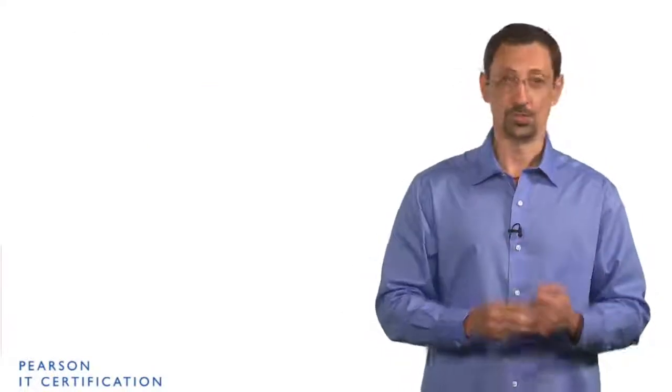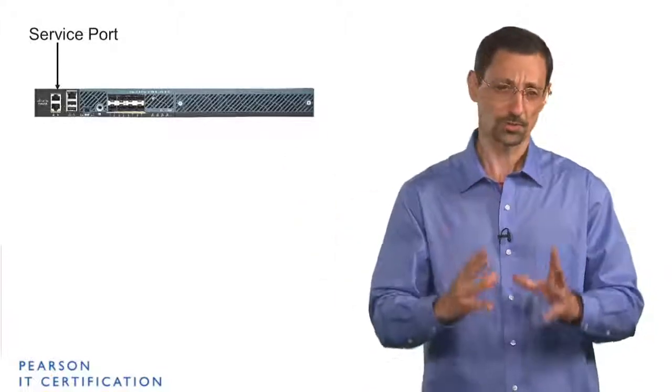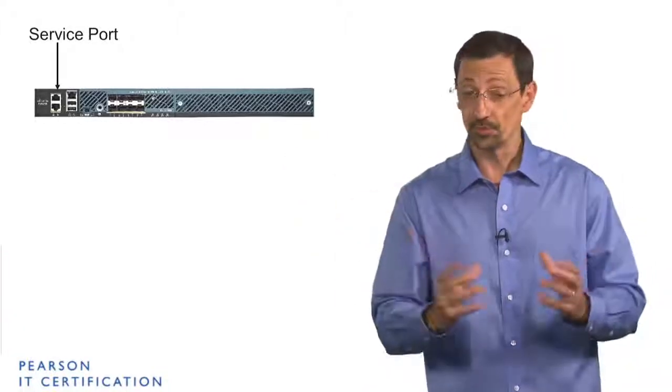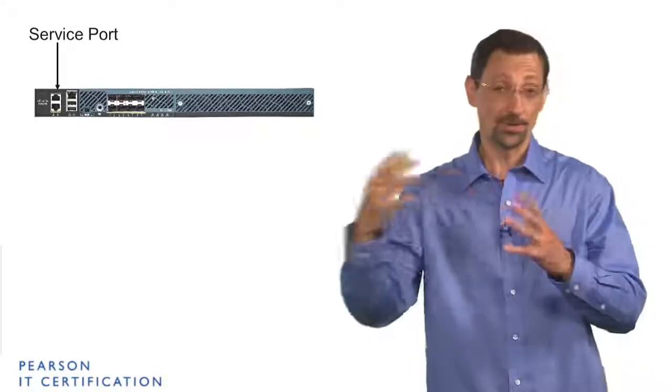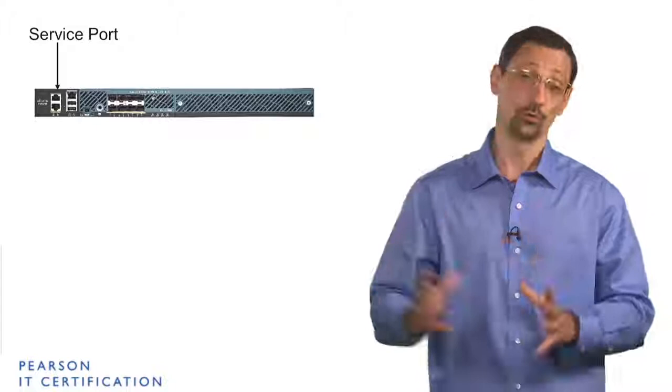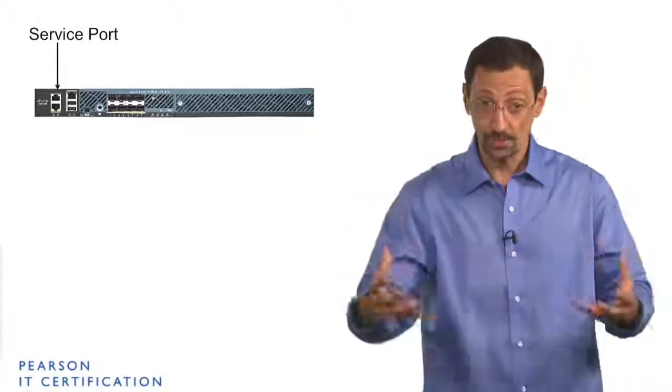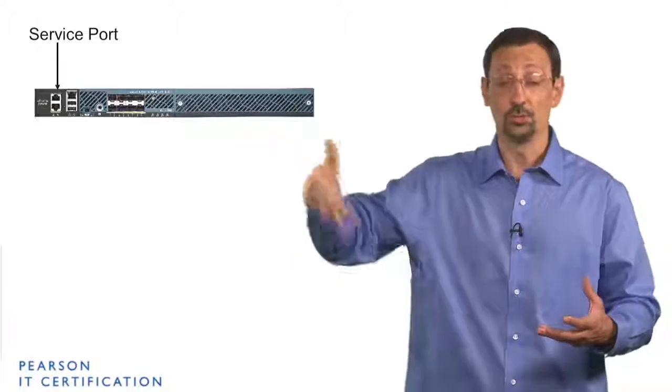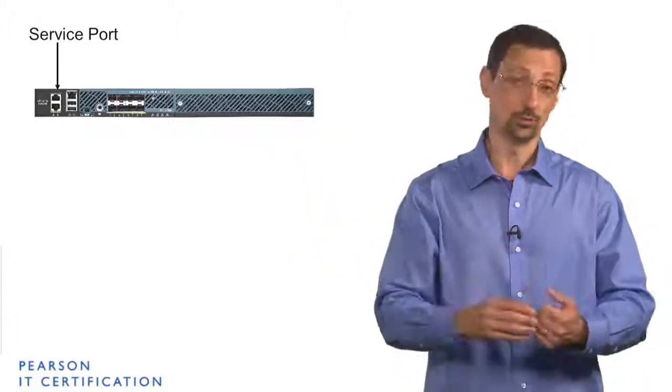There is another interface which is very nice and it's called a service port. What this one does is that it's an out-of-band management interface. It will have a different IP address from the rest of your network and from the rest of your controller connections. You can connect to a subnet where that service port connects and you can get a web interface that is an access into the controller.